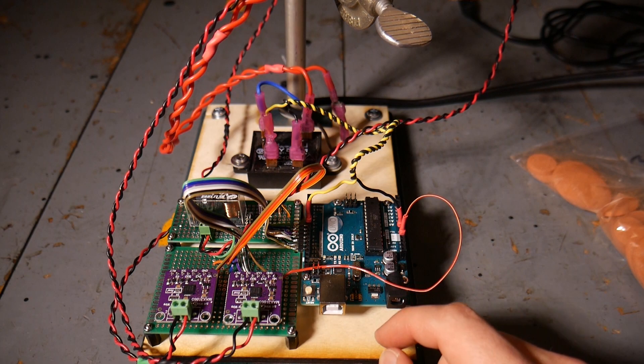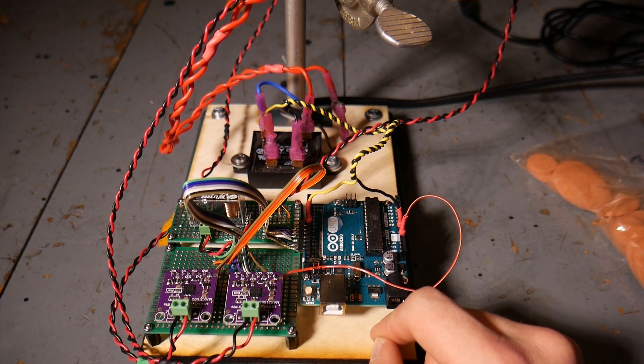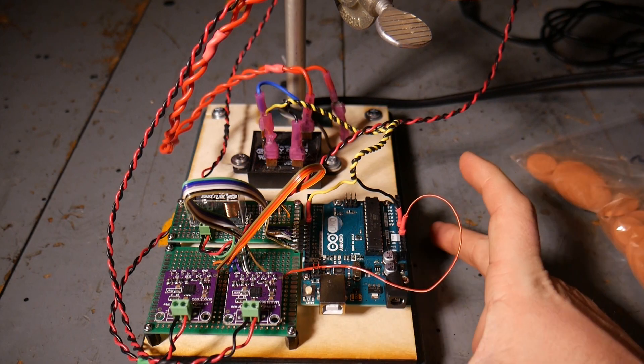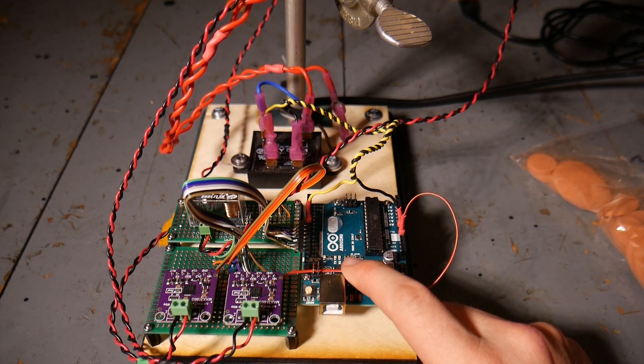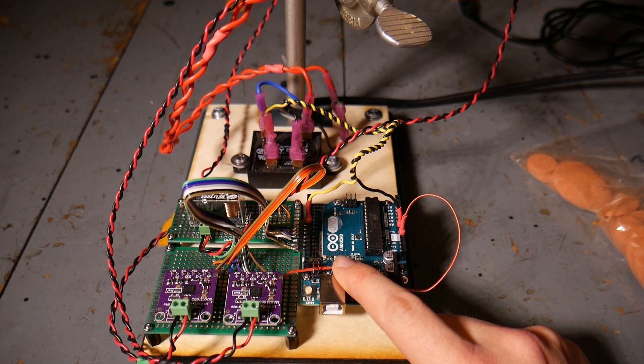All the electronics for this project are mounted to a piece of laser cut wood that is then mounted to the base of the lab stand. This Arduino Uno here runs the control loop that keeps the bottom Lee's disk at a constant temperature. It is also used for data collection from the various thermal sensors.